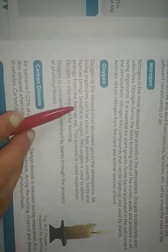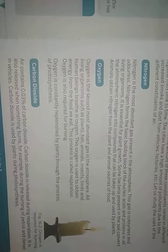Next, we will discuss about oxygen. Oxygen is present in the atmosphere at 21 percent, making it the second most abundant gas. All living organisms — such as plants, fish, animals, insects, birds, and human beings — need oxygen to breathe. Oxygen is used to obtain energy from the food we eat.